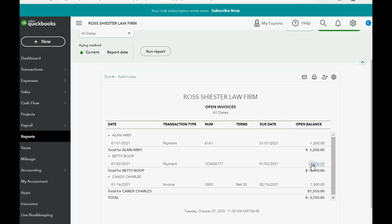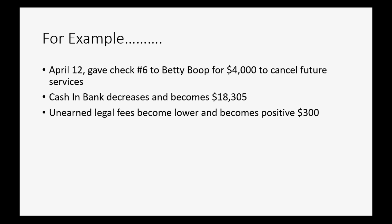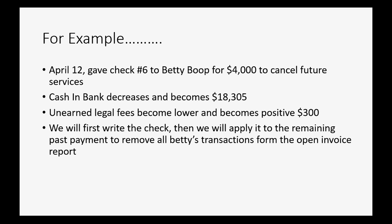The trial balance will change: cash and bank will decrease by four thousand dollars from what it is now and will become eighteen thousand three hundred and five dollars. Unearned legal fees will become so low it actually becomes a positive number — positive three hundred. We will first write the check, then apply it to the remaining past payment to remove all of Betty's transactions from the open invoice report.